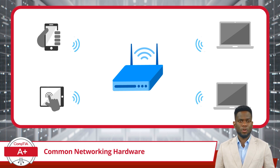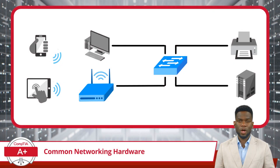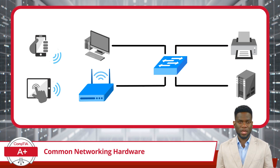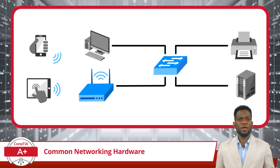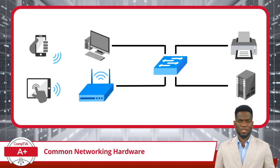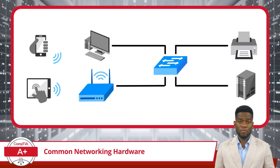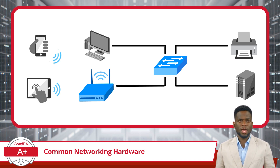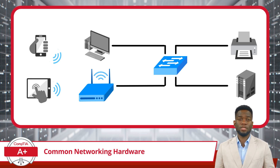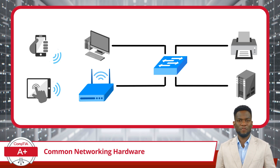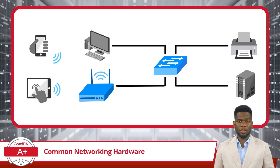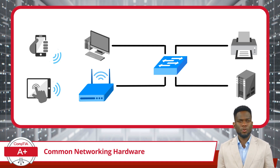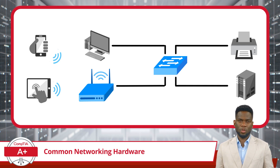The wireless access point takes the data packets it receives from devices such as smartphones, tablets, and laptops, and transmits them wirelessly to the network. Similarly, it receives data from the network and sends it wirelessly to connected devices. This two-way communication allows devices to access the network and share information seamlessly. Devices connect to a wireless access point just like connecting to a Wi-Fi network — when you turn on your device's Wi-Fi, it scans for available wireless networks, and when it detects an access point, it prompts you to connect. Once connected, you can access the network's resources and communicate with other devices, just like in a wired network.